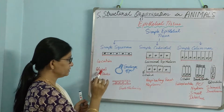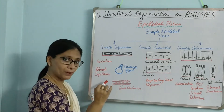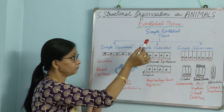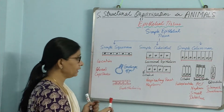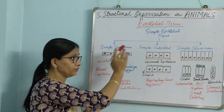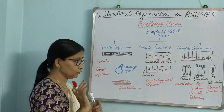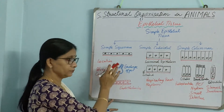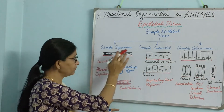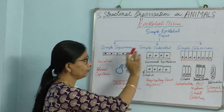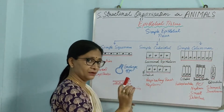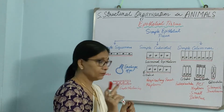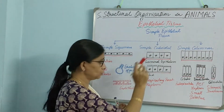So the location of simple squamous is alveoli and capillaries. You will have to remember the name of the organ where these epithelial tissues are placed, because the placing of these tissues is based on their functions. As this is for exchange of things, it is simple squamous — a very thin layer. Now the next is simple cuboidal, where the covering is made up of one layer of cuboidal cells.